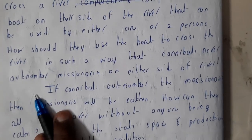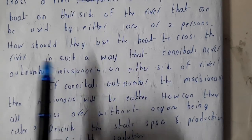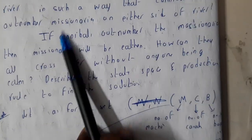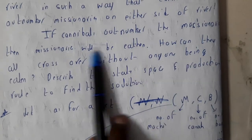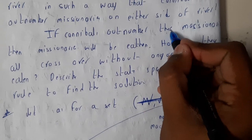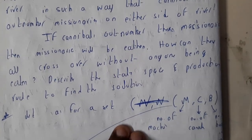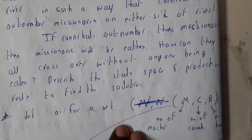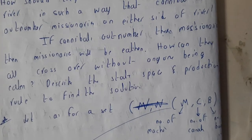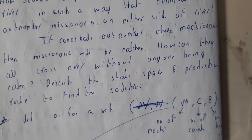The cannibal number should never be greater than the missionaries on either side of the river — not just one shore but both sides. If cannibals outnumber the missionaries, the missionaries will be eaten. I'll be going through the final conclusion as an AI system, because discussing the initial stages repeatedly would take too long.